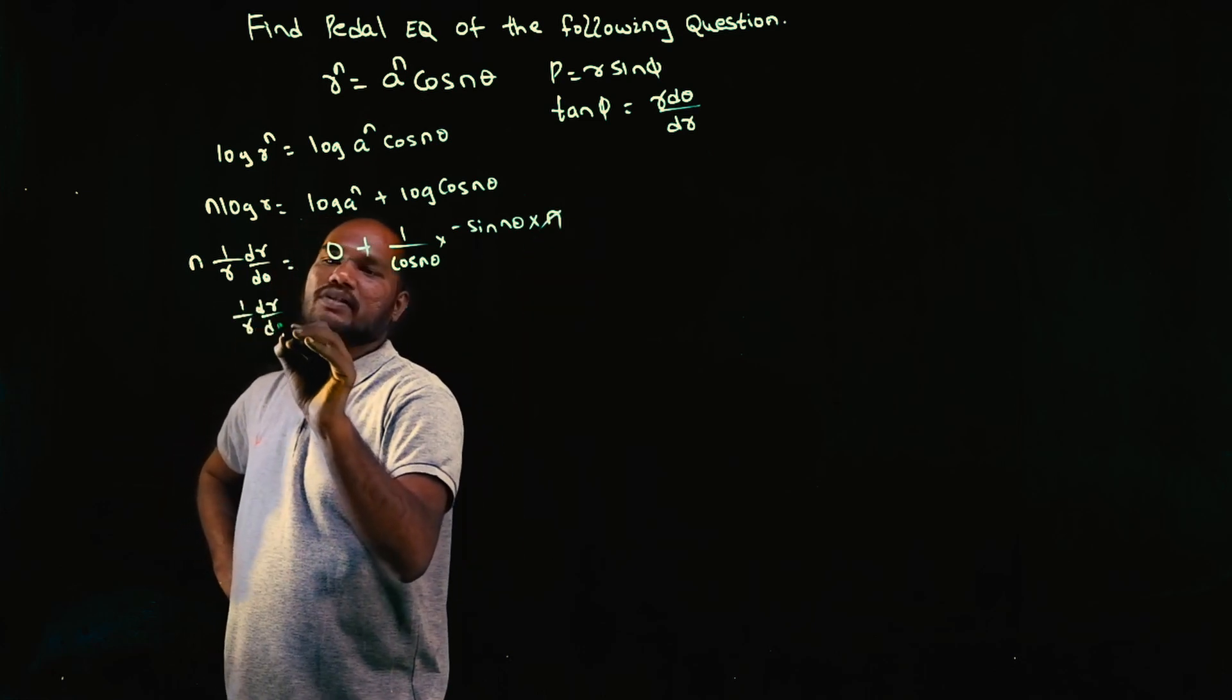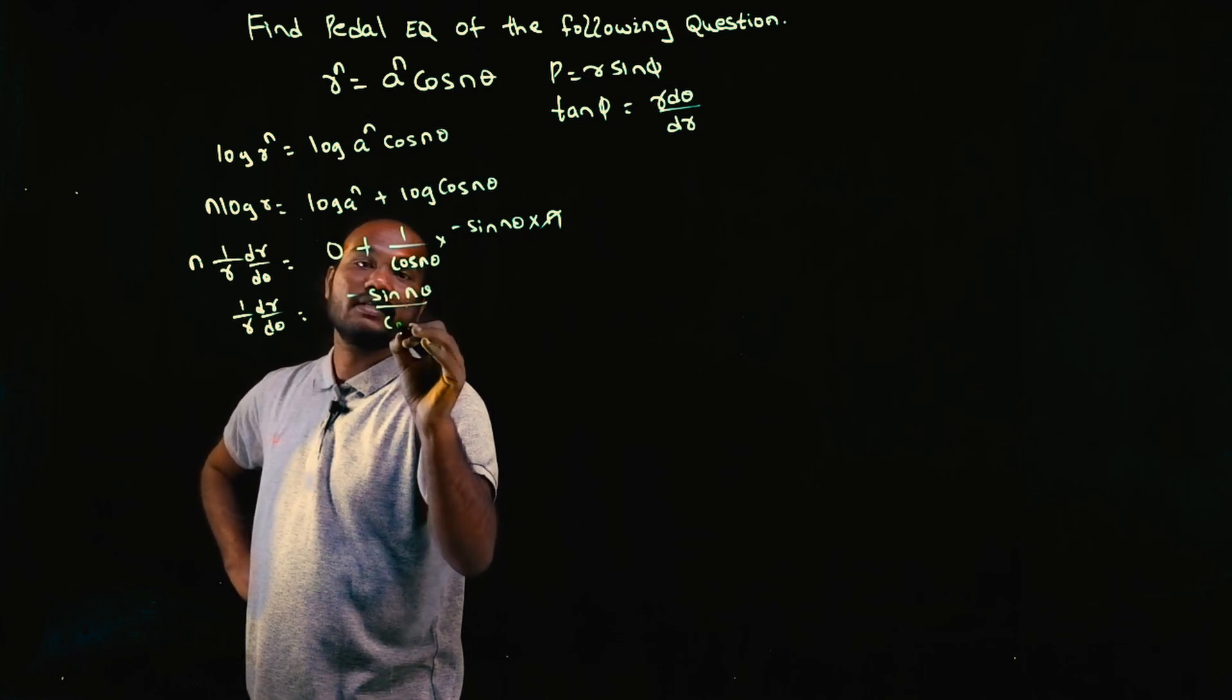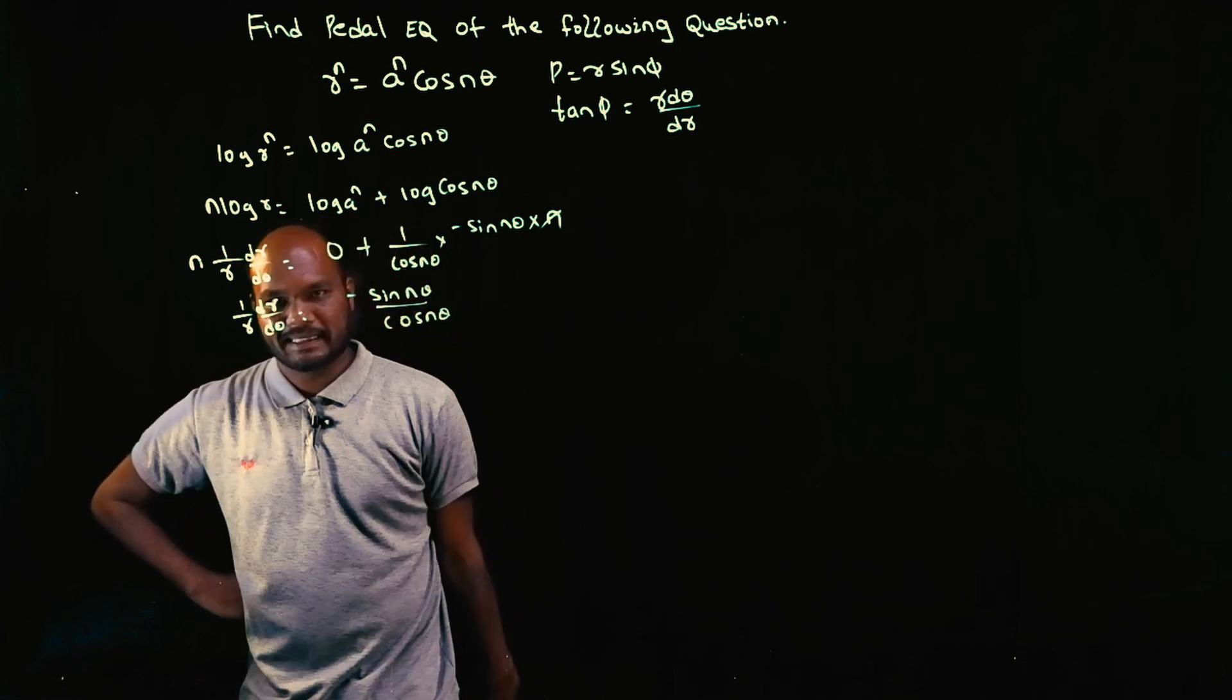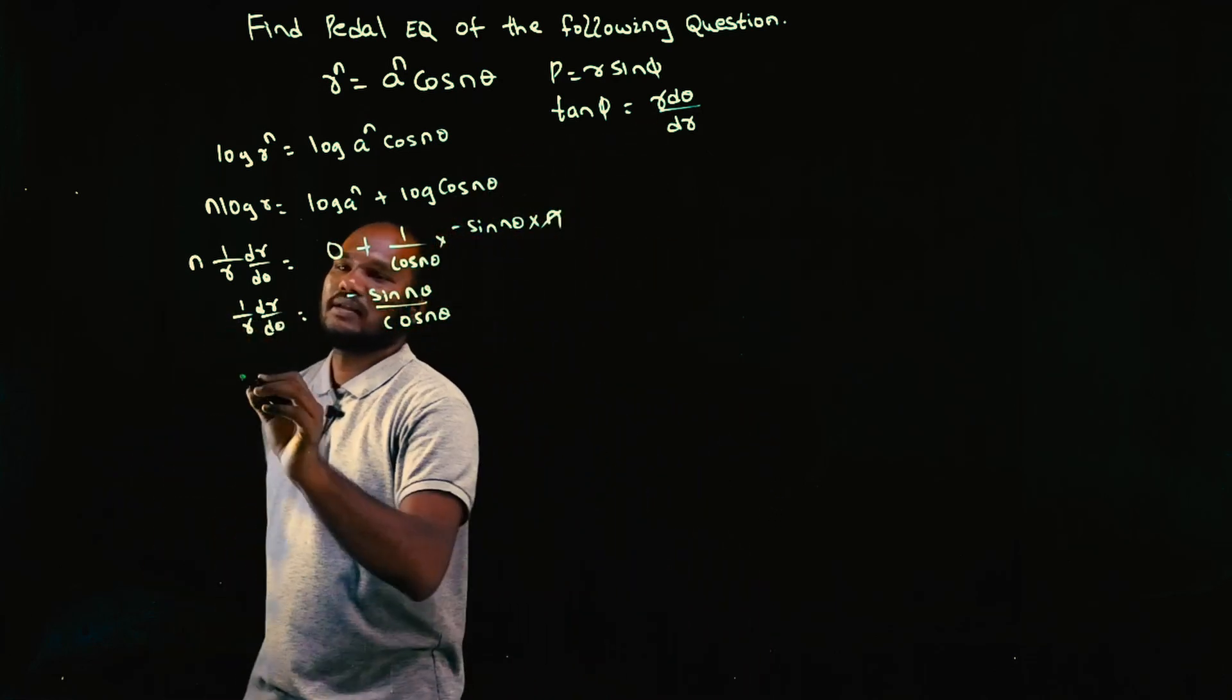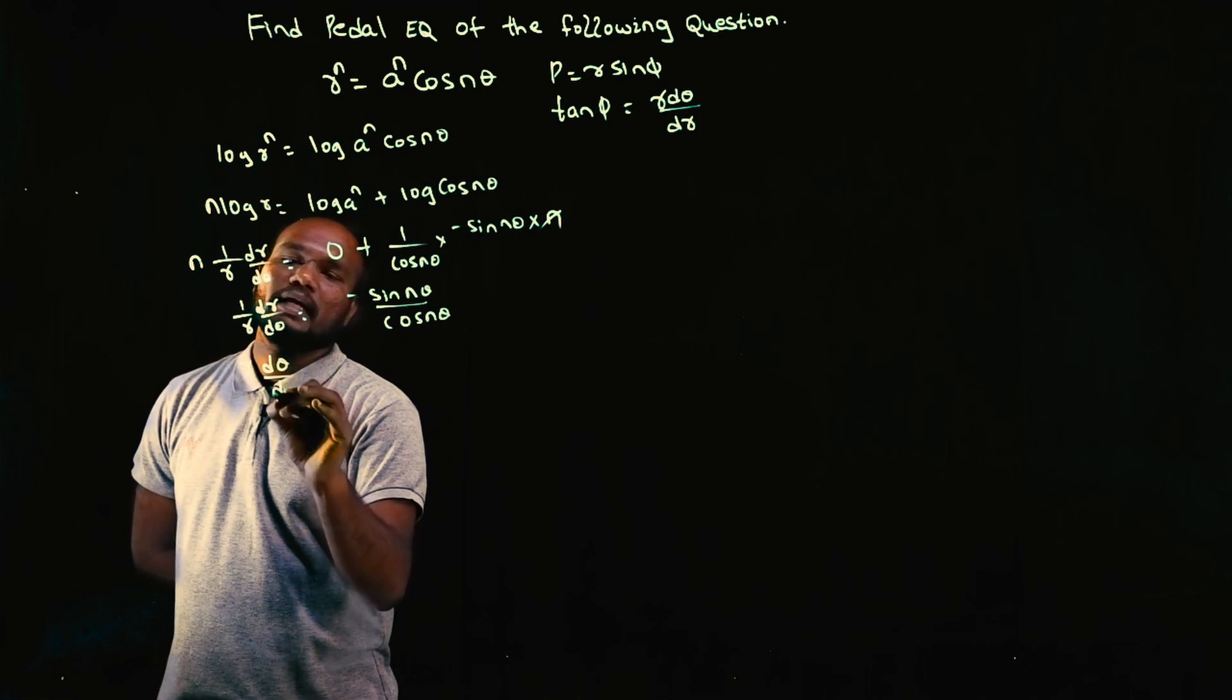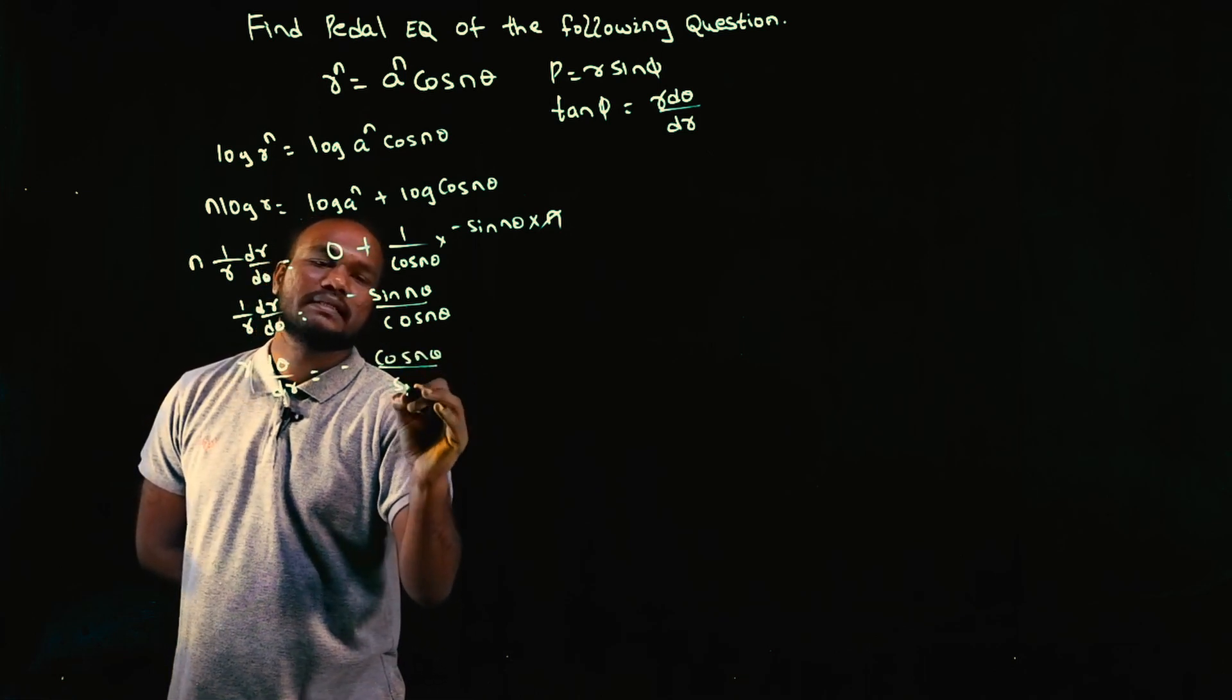See here, n and n get cancelled. So 1 by R dr by d theta value is sin n theta upon cos n theta. Do we want 1 by R? No, we want R. So let's flip it. So R into d theta by dr is equal to minus cos n theta upon sin n theta.